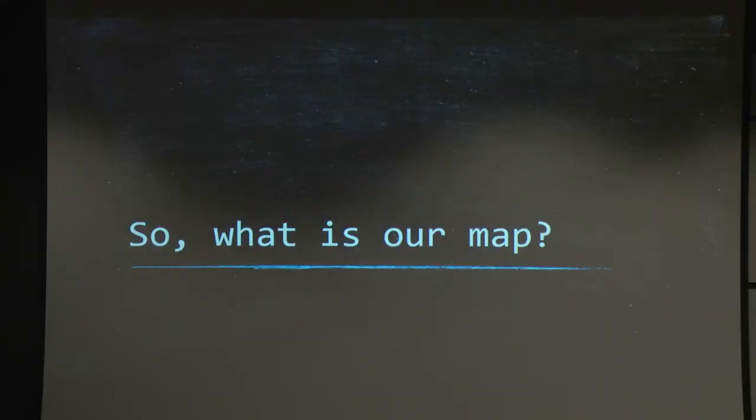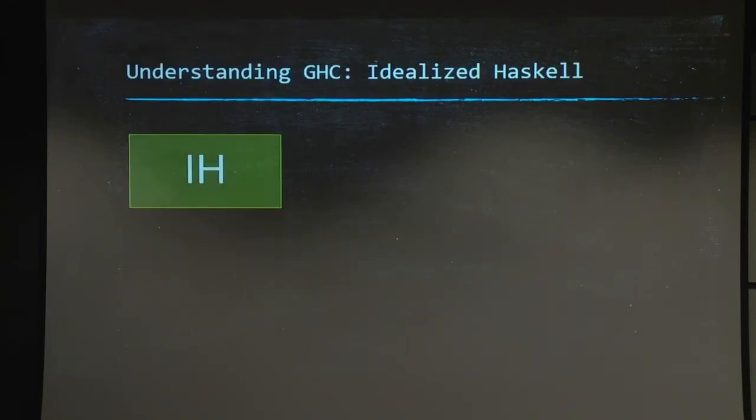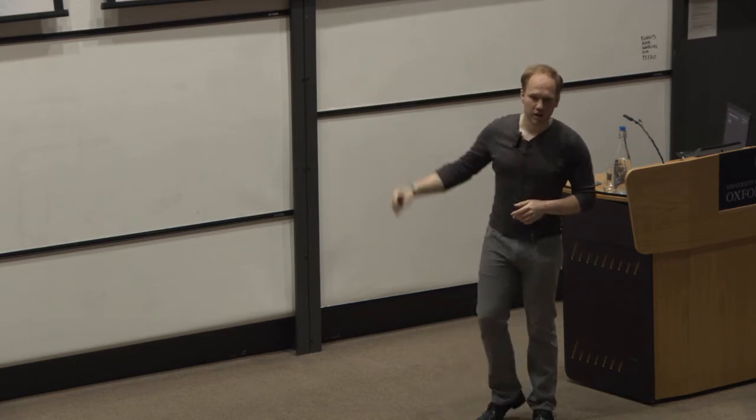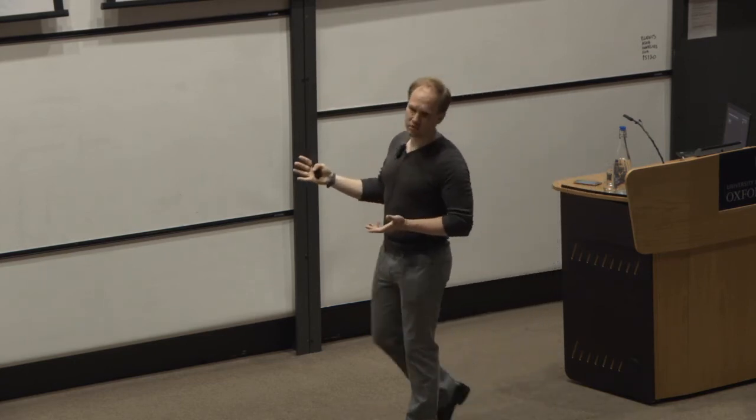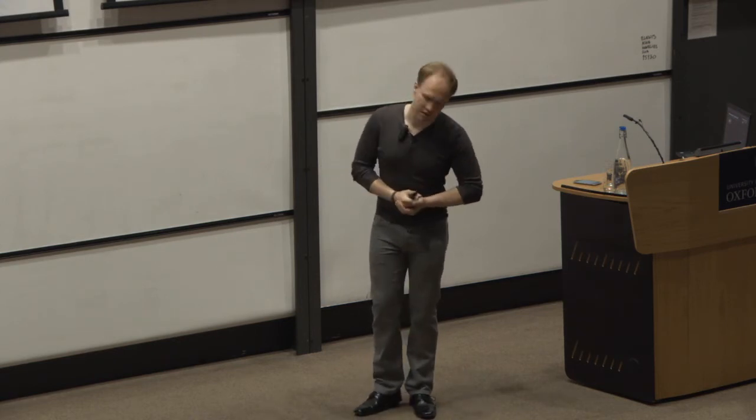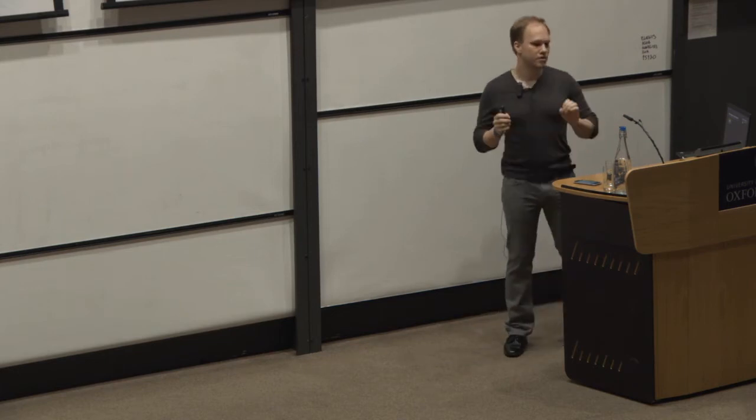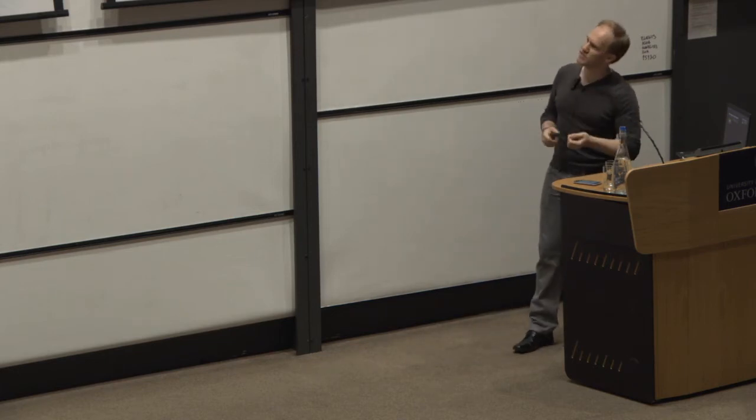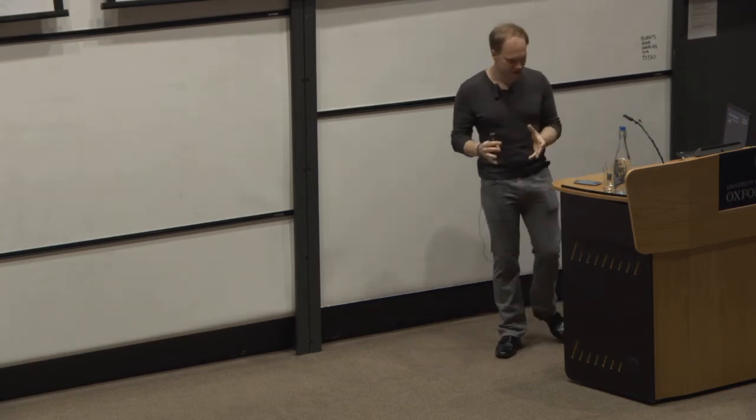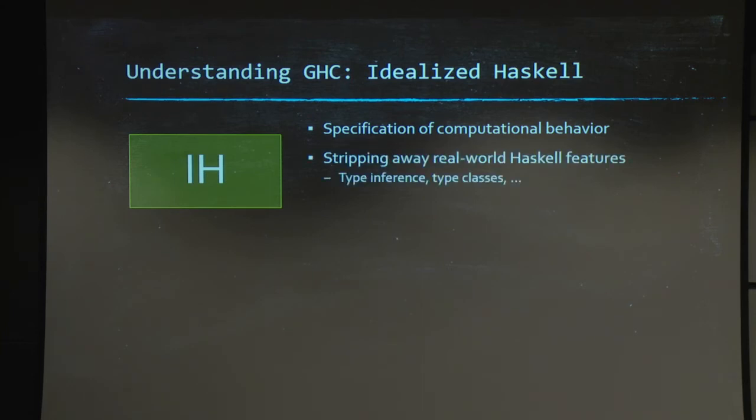So, what is our map for this work? Well, to understand this, let's just have a look first at how current GHC works. I'm going to introduce that language, IH, for idealized Haskell. Why do we want to introduce a language like that? Well, it's just for the purpose of this talk to understand the, to have a better view, basically, of the specification of the, sorry, let me backtrack. To have a clear specification of the computational behavior of Haskell terms. And also, of their type features.